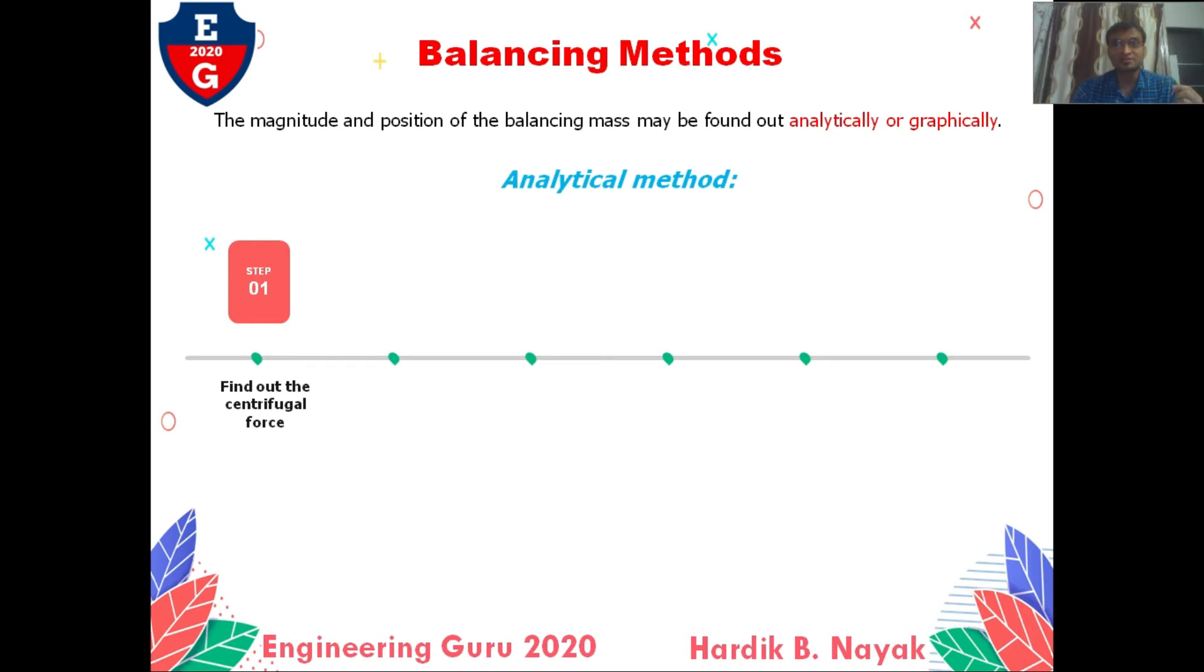We already discussed in previous lecture that centrifugal force equals m times r times omega squared. First step: we have one axis of rotation, meaning our omega is constant. So we can find Fc1 equals M1 times R1, Fc2 equals M2 times R2, Fc3 equals M3 times R3, Fc4 equals M4 times R4. So first step: find out the centrifugal force.